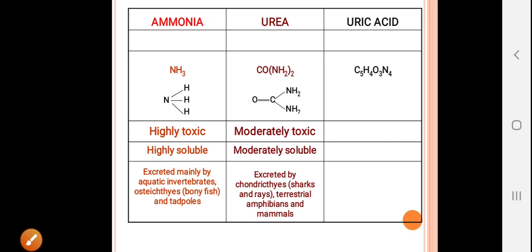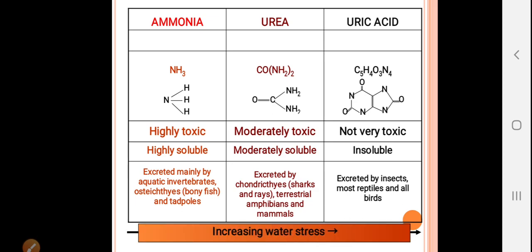Uric acid is in colloidal form and is very non-toxic and insoluble in water. It is excreted by insects, most reptiles, and all birds. With increasing water stress, ammonia requires a large amount of water, urea requires less, and uric acid the least.